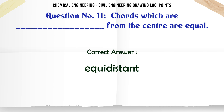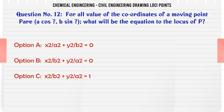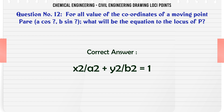For all values of coordinates of a moving point, where x=a·cosθ and y=b·sinθ, what will be the equation of the locus? a) x²/a² + y²/b² = 0, b) x²/b² + y²/a² = 0, c) x²/b² + y²/a² = 1, d) x²/a² + y²/b² = 1. The correct answer is x²/a² + y²/b² = 1.